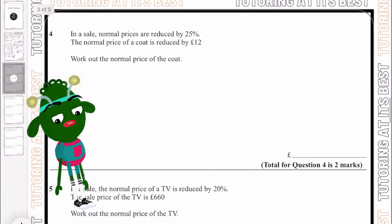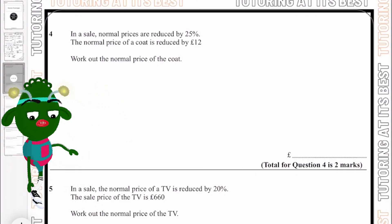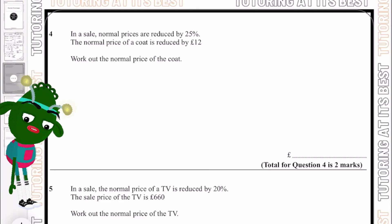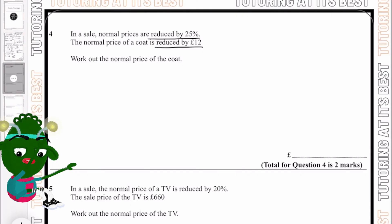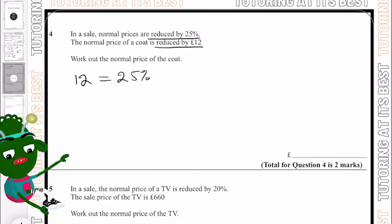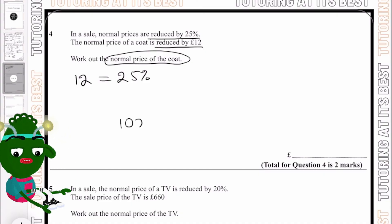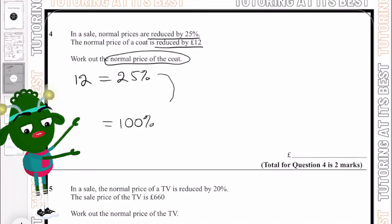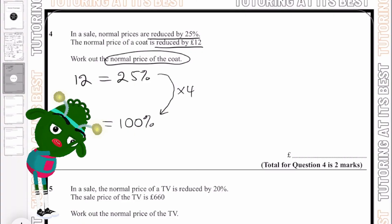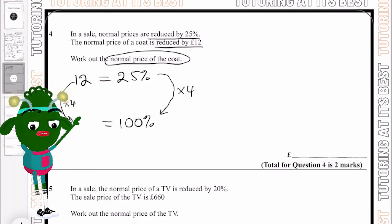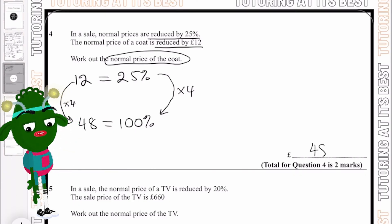Let's go for question four now. In a sale, normal prices are reduced by 25%, and the normal price of the coat is reduced by £12. So reduced by 25% and reduced by £12, that's giving us a hint there. We now know that £12 equals 25%. So how do we work out the normal price? Remember, the normal price is worth 100%. So what do we times from 25 to get to 100? Well, we know it's 4. So if we times one side by 4, we times the second side by 4, and 12 times 4 gives us £48. So the normal price of the coat was £48.